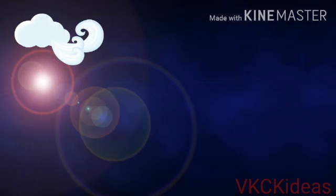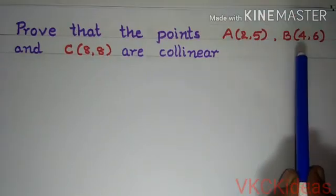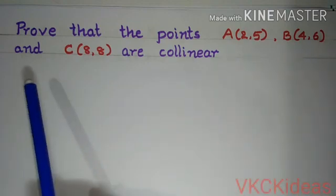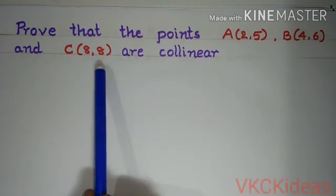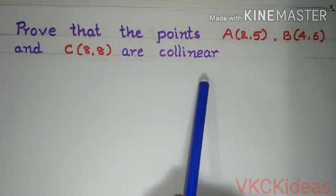Here is a problem. Prove that the points A(2, 5), B(4, 6) and C(8, 8) are collinear.